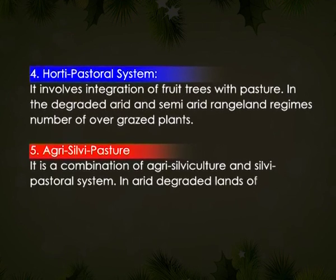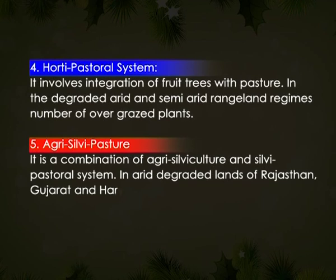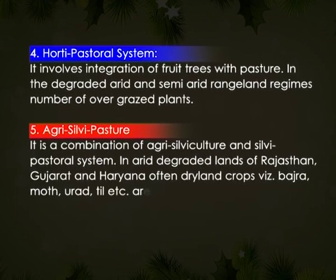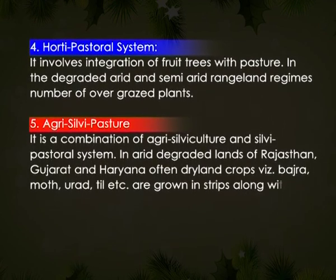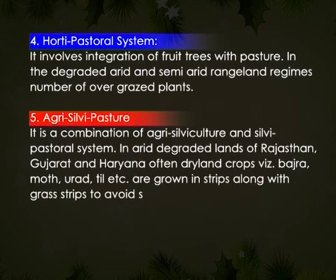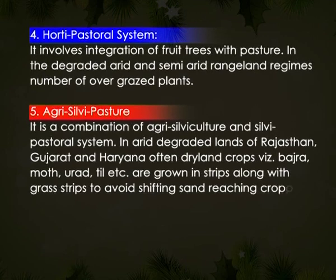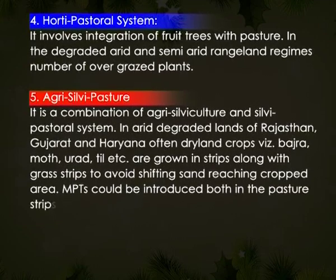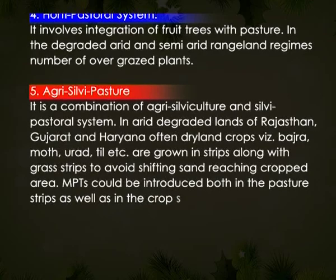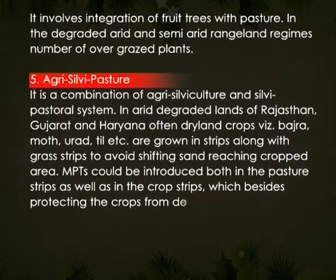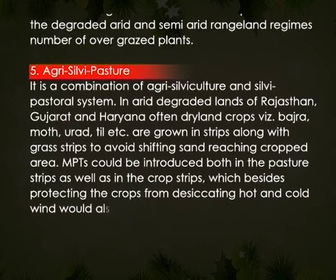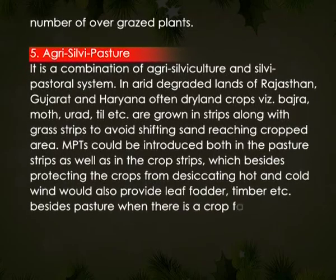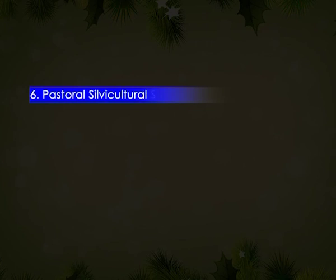In arid degraded lands of Rajasthan, Gujarat, and Haryana, dryland crops — namely bajra, moth, urad, til, etc. — are grown in strips along with grass strips. Multi-purpose trees could be introduced both in the pasture strips as well as the crop strips. Besides protecting the crops from desiccating hot and cold winds, they would also provide leaf fodder, timber, etc., and support pasture when there is crop failure.